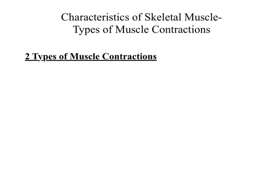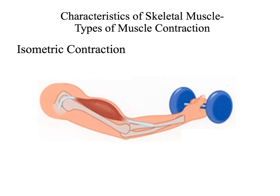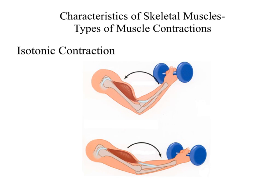Next, we talk about the types of muscle contractions. There are two types: the first is called an isometric contraction, and the second is called an isotonic contraction. In an isometric contraction, the tension in the muscle increases while the length of the muscle stays the same — it doesn't change. In an isotonic contraction, the tension in the muscle increases while the length of the muscle changes. There are two types of isotonic contractions.